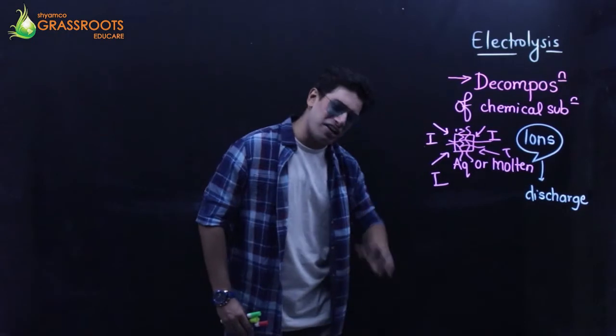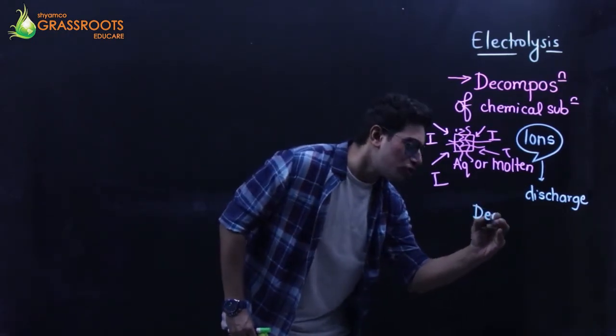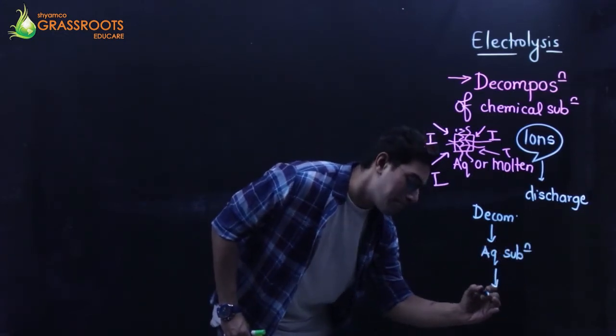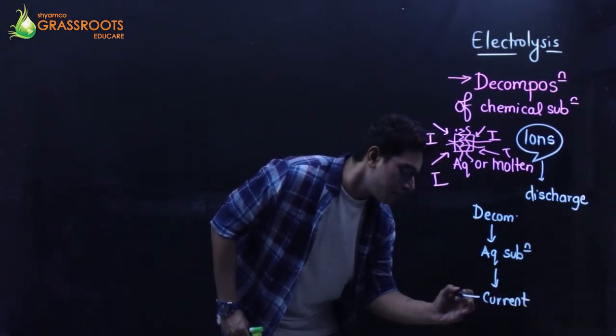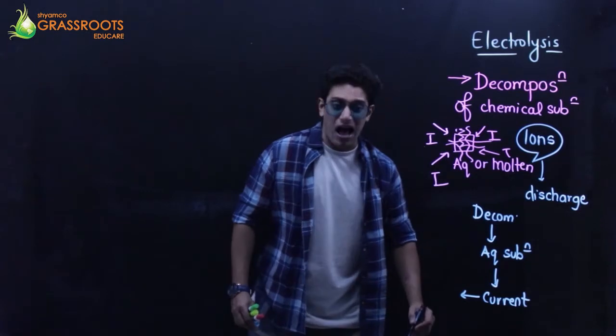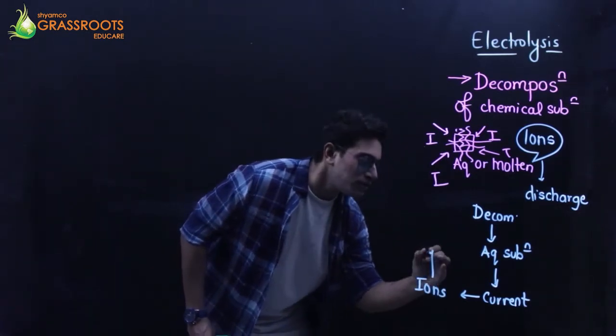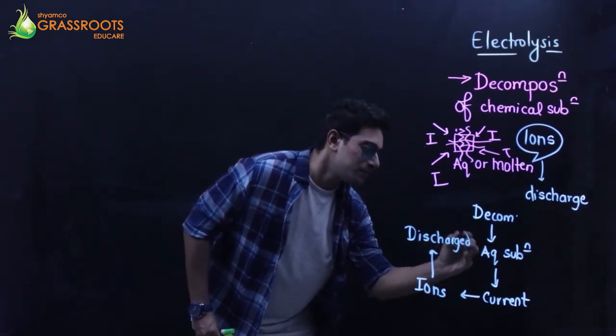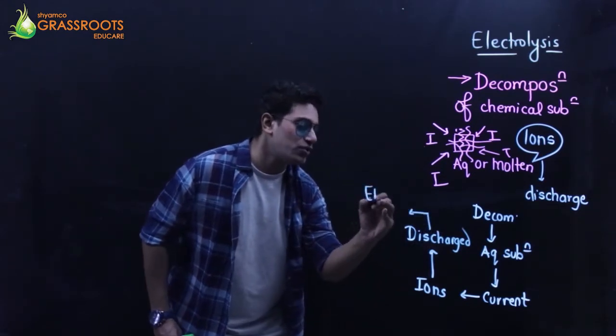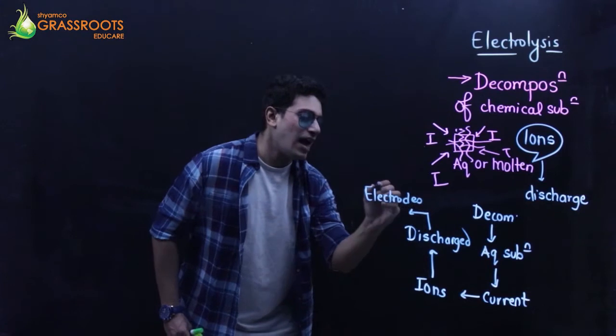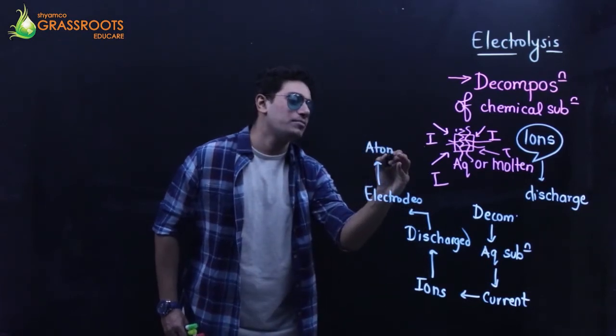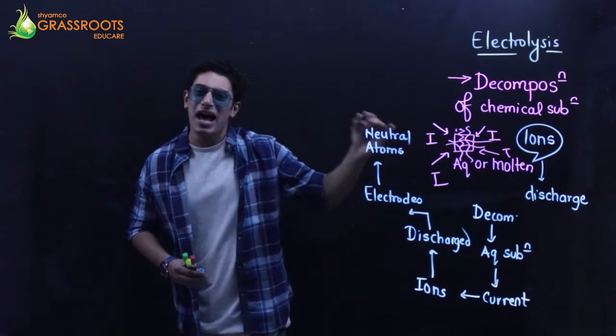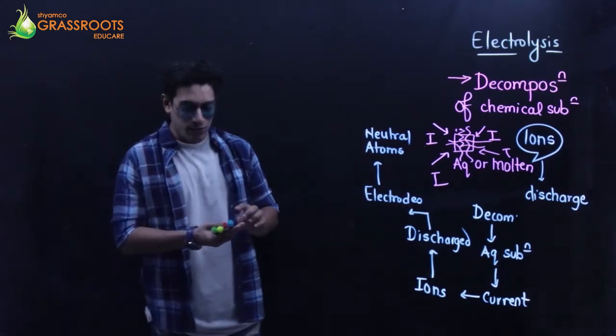If I draw a flow chart: decomposition of aqueous substance by passage of current. When you pass current, ions are formed. The ions are discharged - they swim towards the respective electrodes and form the respective neutral atoms. That's how the process flows, beautiful process. This entire process is called electrolysis.